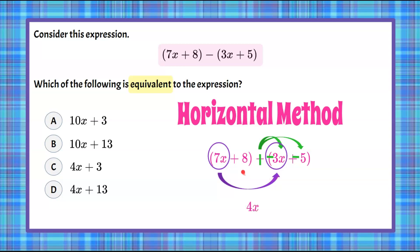When we combine those, we're going to get 4x. Then we have our constant terms, 8 and negative 5, and 8 and negative 5 are 3. And that's a positive 3. So we get our equivalent expression that's in simplest form, 4x plus 3, which is answer choice C.